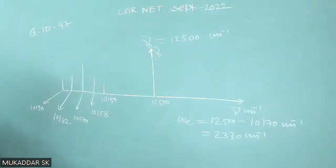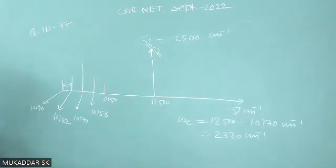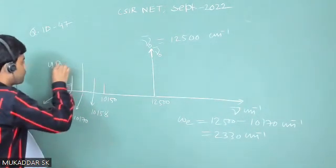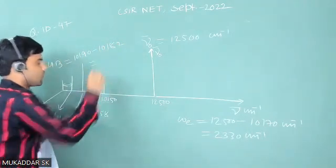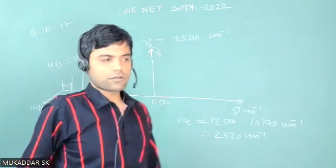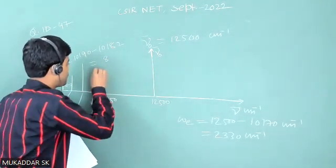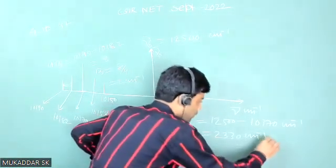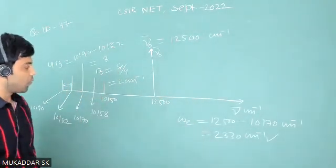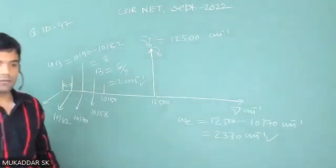We also know that the separation between two consecutive Raman or Stokes lines equals 4B. So 4B equals 2090 minus 2082, because the separation between two consecutive rotational Stokes lines is 4B. That gives 8 cm⁻¹, which implies B equals 8 divided by 4, which is 2 cm⁻¹. This is the rotational constant of the N₂ molecule. Thank you.